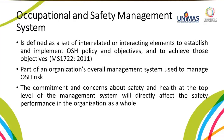Occupational Safety and Health Management System is defined as a set of interrelated or interacting elements to establish and implement Occupational Safety and Health Policy and Objectives and to achieve those objectives. It is part of an organisation's overall management system used to manage Occupational Safety and Health risk.